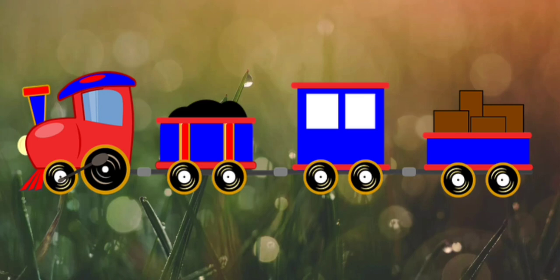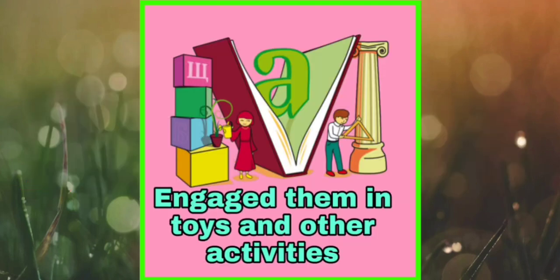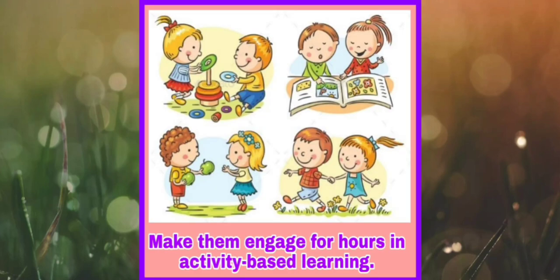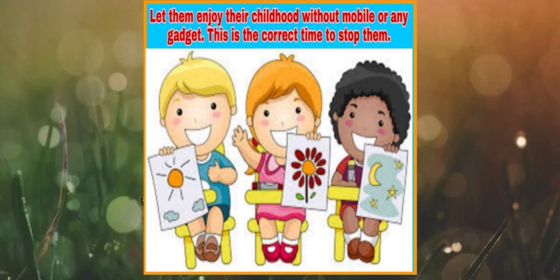So why not get something to play with that is challenging every time they engage in it? I am not speaking of getting lots of new toys. Instead, what you could do is subscribe to activity boxes that will be delivered every month, or drop one new toy every month for them. Make them engage for hours in activity-based learning. Let them enjoy their childhood without mobile or any gadget — this is the correct time to stop them.